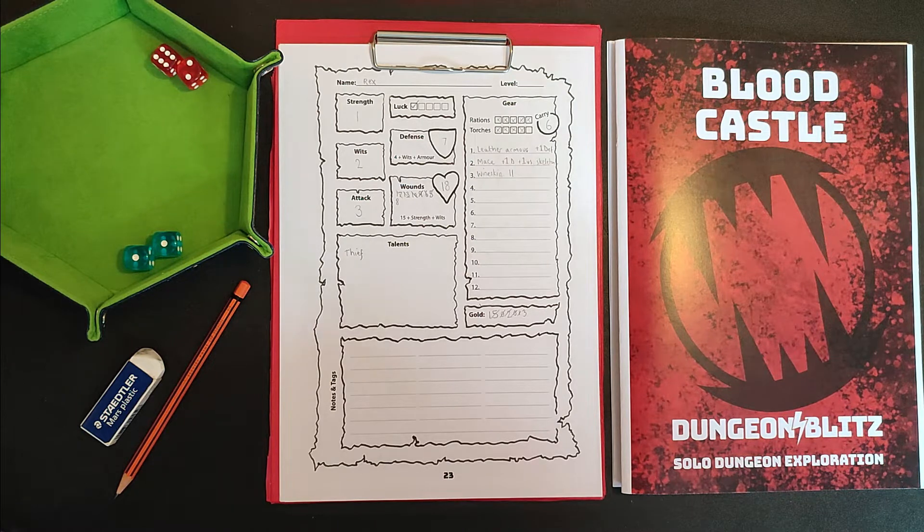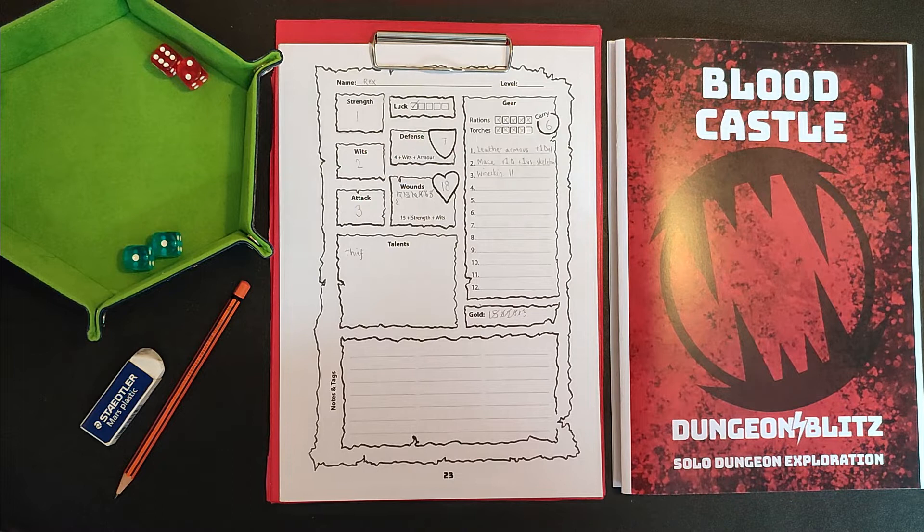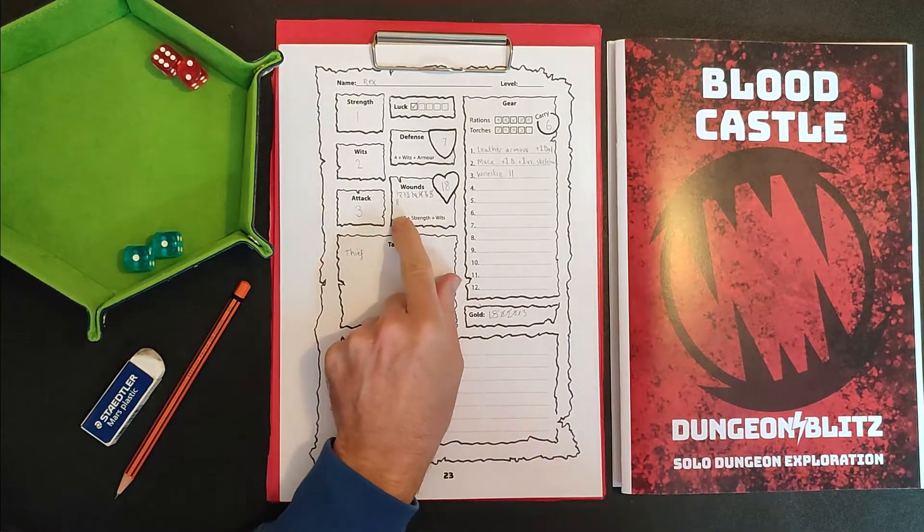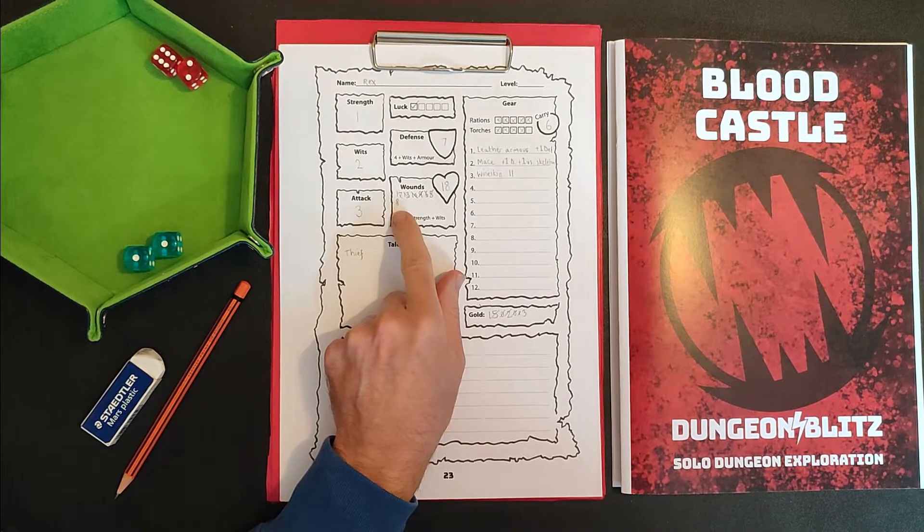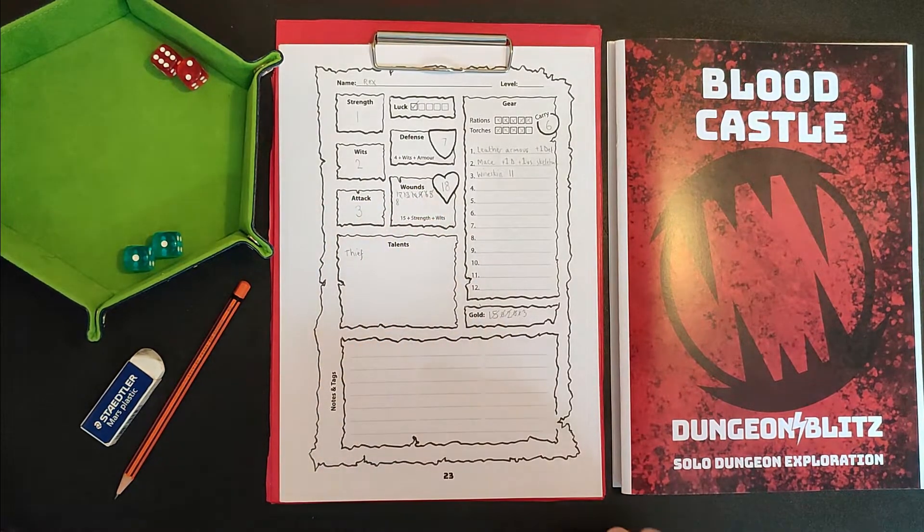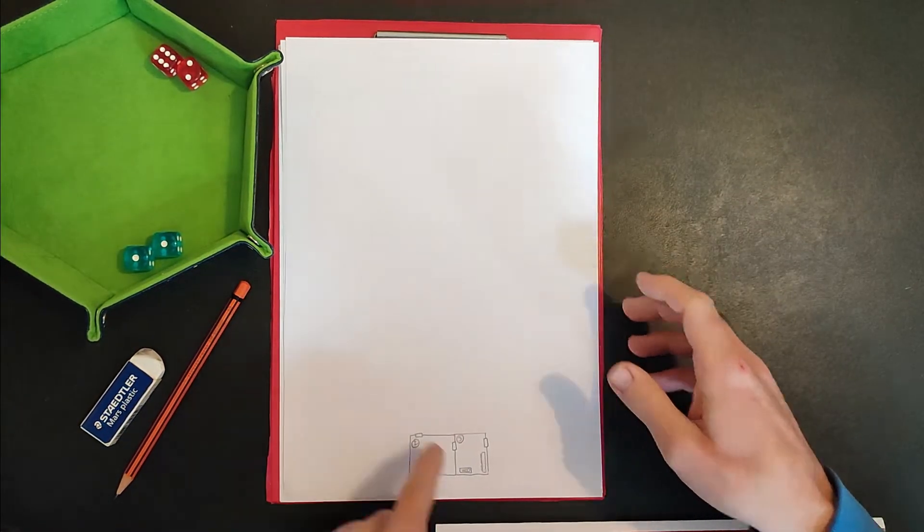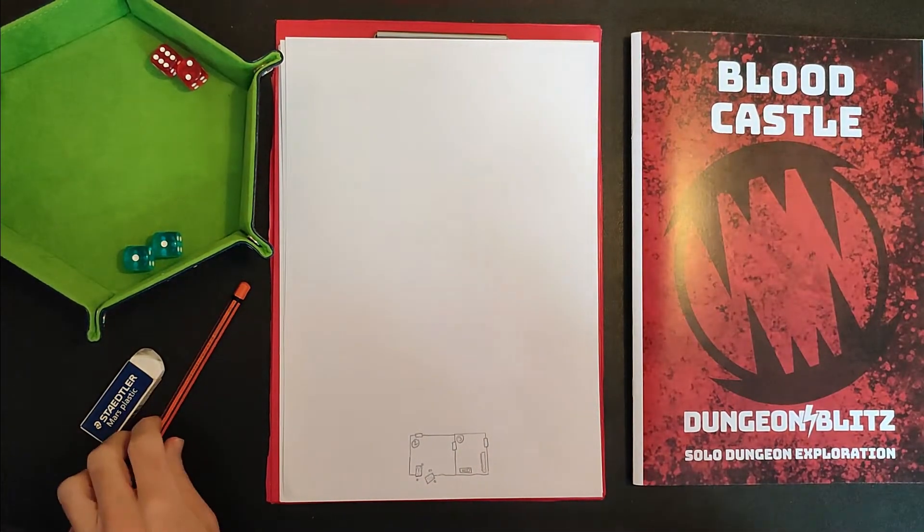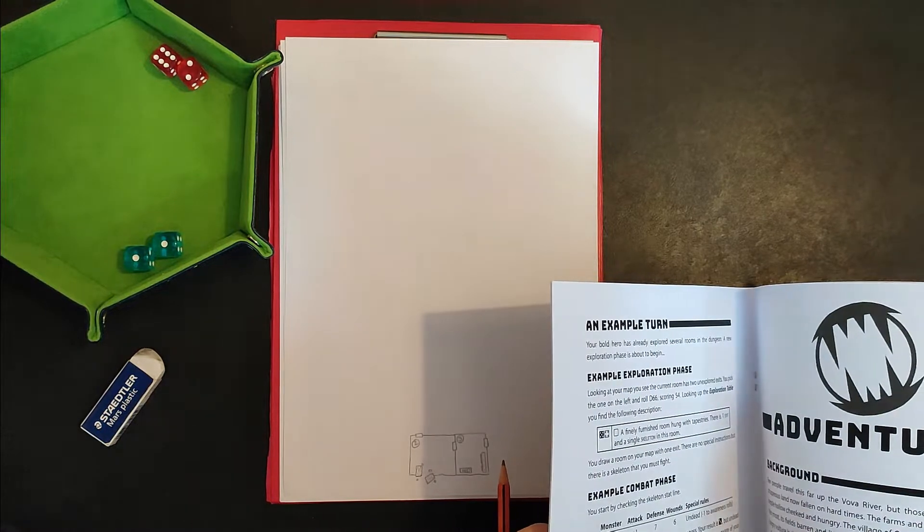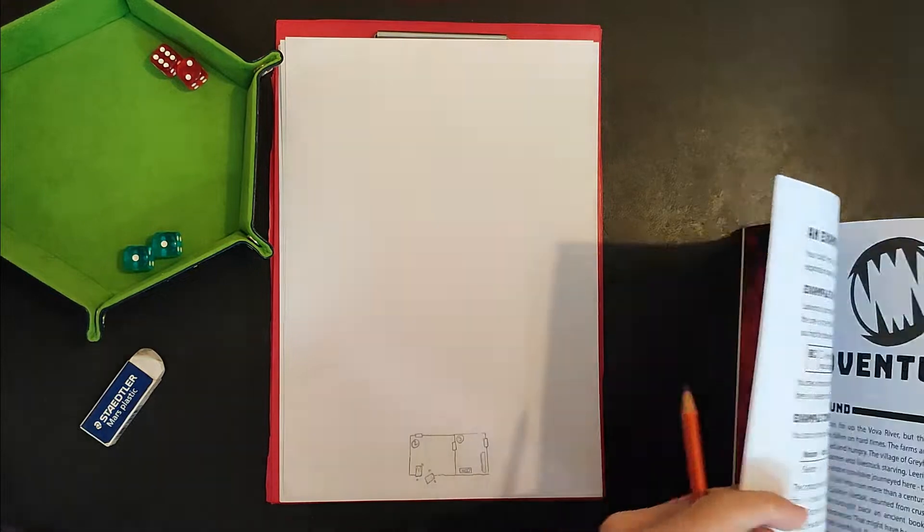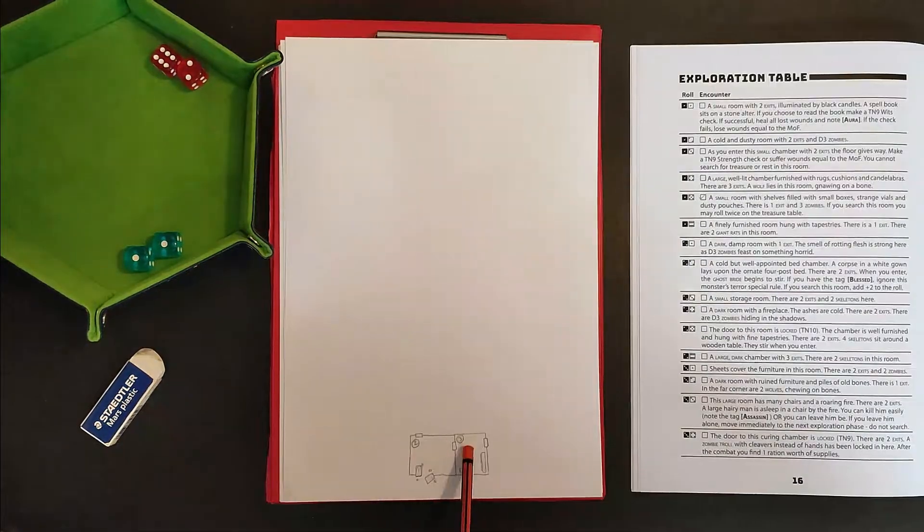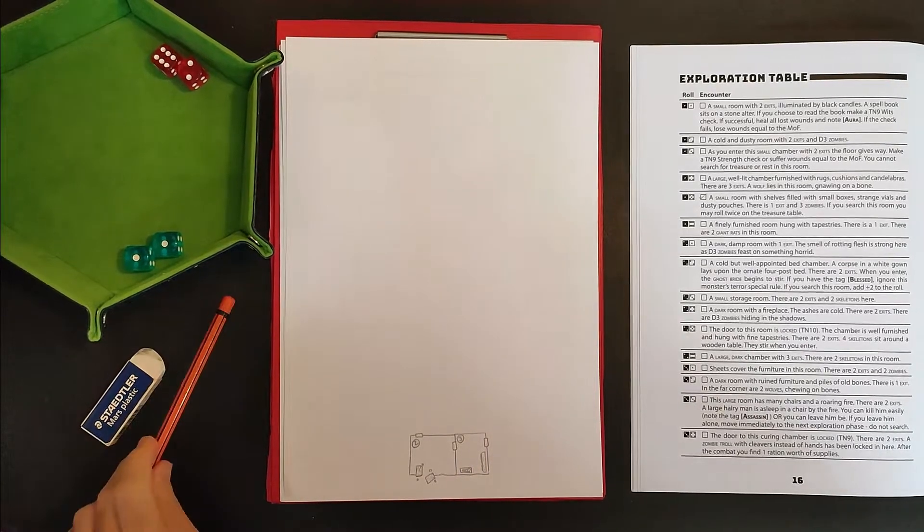Now we have already made a start in our delve into the Blood Castle with our adventurer Rex. Rex took a bit of a battering from some zombies. Thankfully he found a ration and he's back up to eight wounds. He was taken down to five by the zombies. He did find a little bit of gold in that room, so that's pretty sweet, and that was only room number two of the castle. So we need to try and find out what's going on in this castle and maybe find a bit more gold so that I can heal and buy additional bits and pieces.